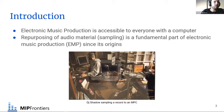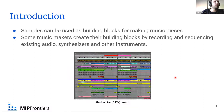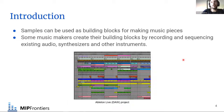Here we can see a picture of DJ Shadow, a classic hip-hop or trip-hop producer who is taking a piece of a record — probably a drum break — and putting it on his MPC to be chopped, rearranged, and re-sequenced into a different piece. Some music makers also create their own building blocks by recording and sequencing existing audio, or by recording synthesizers and other instruments.